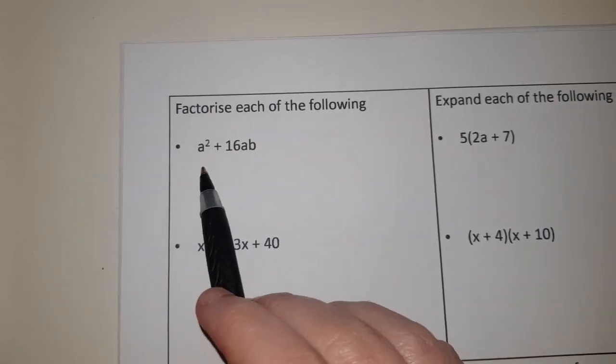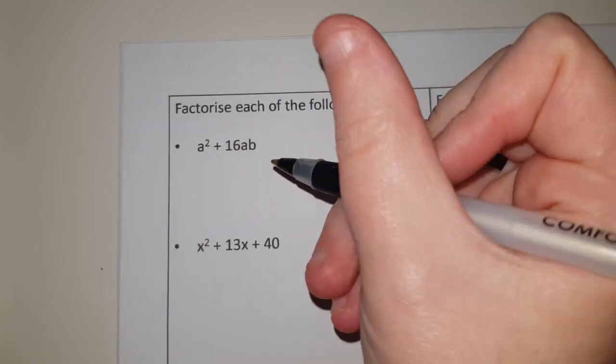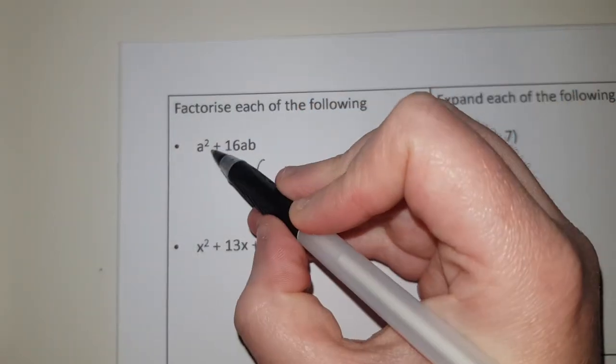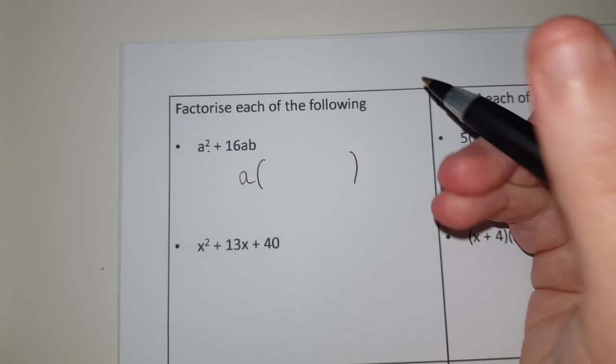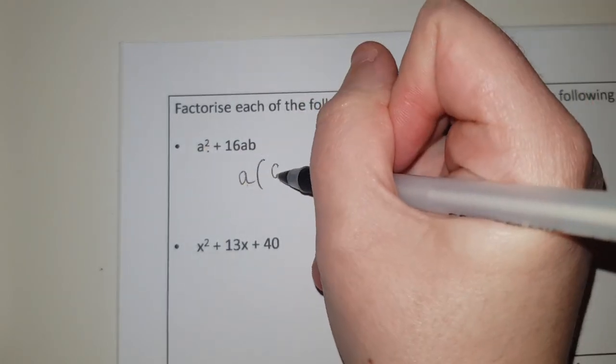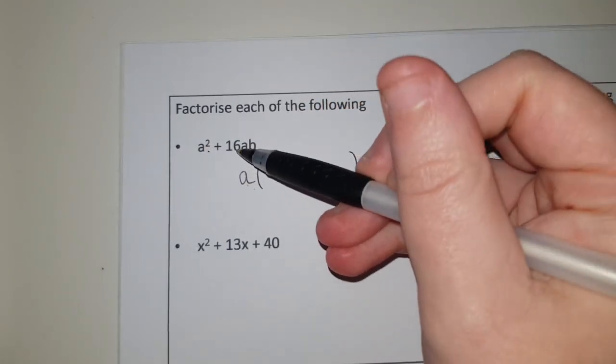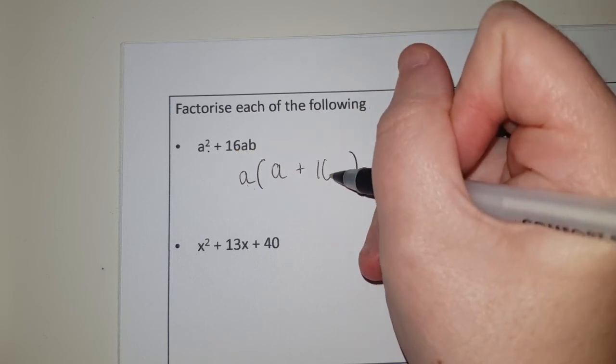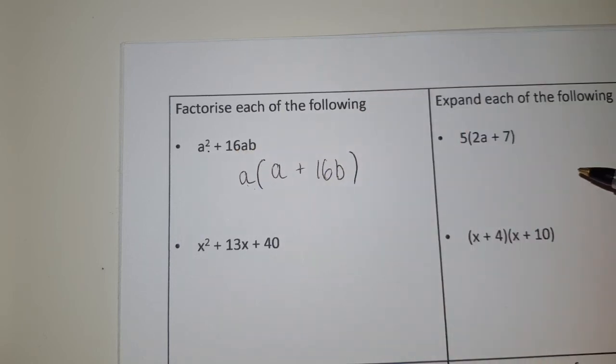So factorising, there's only two terms so I'm going to factorise into a single bracket. Now the only thing that's common to both is the letter A. So to get from A to A squared I'd need another A. To get from A to 16AB I'd need the 16 and the B and that's it, first one factorised.